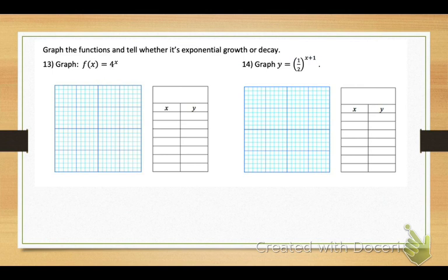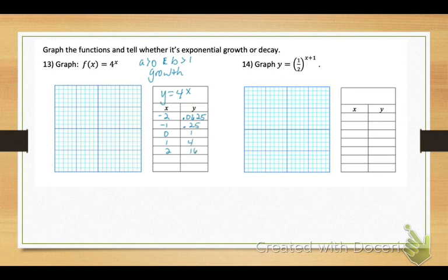Number 13: graph f of x equals 4 to the x. Starting value is 1 (greater than 0), base is 4 (greater than 1) — this is growth. Plug in x values from negative 2 to positive 2: 0.0625, 0.25, 1, 4, and 16. Drop the x-axis down to give more space, then carefully graph the curve, making sure it never touches or crosses the x-axis — it gets very close but never reaches it.